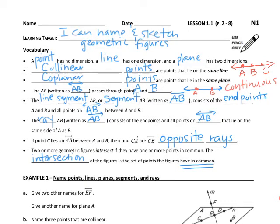Co-planar points are going to lie in the same plane. When we get to the diagram at the center section of your page, I'm going to discuss some co-planar points. Line AB — notice the way that it's written. We're going to learn some new notation as well. The notation has an arrowhead on both ends above the capital A and the capital B.